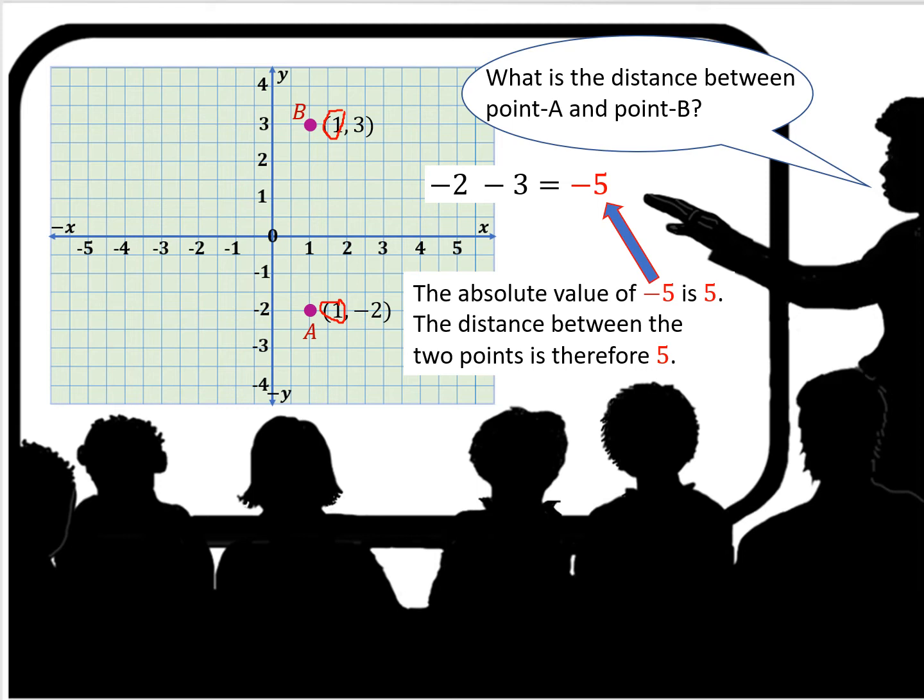So minus 2, which is A, minus 3. We're going to add the opposite sign and we get negative 5. But remember, the distance between them is always the absolute value. The absolute value of negative 5 is 5. The distance between the two points is therefore 5 units.